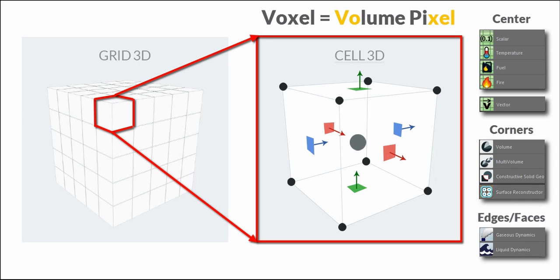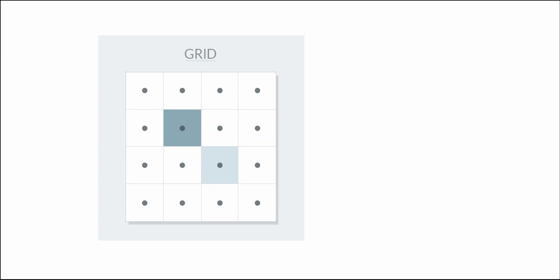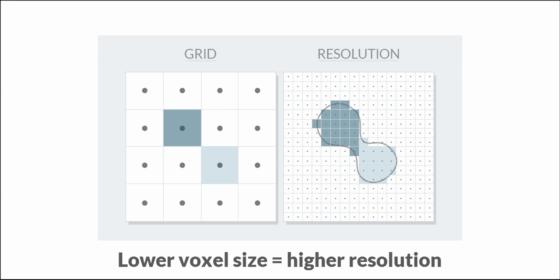Returning to the 2D version of a grid for clarity: we see two grid cells filled with values. Can you imagine which shape has emitted these values into this grid? Probably not. But if we lower the voxel size, we can clearly see that we get a lot more detail and we can imagine a shape much better. So a lower voxel size — lower grid cell size — results in a higher resolution. That's also the case for the framework. If you want more detail in your simulations, you need a lower voxel size.